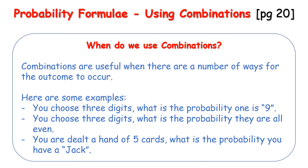This question comes up a lot: when do we use combinations? Combinations are useful when there are a number of ways an outcome can occur, but it's not a Bernoulli situation — there isn't a set number of trials in the same sense. For example: you choose three digits — what's the probability that one is a nine? You choose three digits — what's the probability they're all even? You are dealt a hand of five cards — what's the probability you have a Jack? You could break these down into Bernoulli, but it's much easier to use the N choose r combination approach: how many different ways can you pick three digits, how many ways can you be dealt five cards, and then how many of those ways include a Jack?